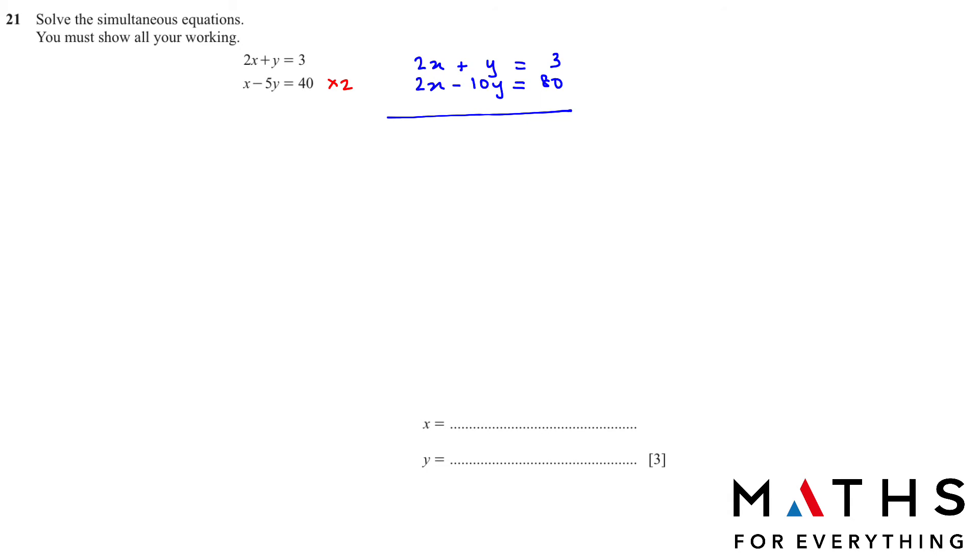Because my signs are same, 2 plus 2 will give me 4, so I need to subtract. When we subtract, all the signs change for each term. 2 minus 2 is 0. If there's no number, there is a 1, so 1 plus 10 will give me 11y. And 3 minus 80 will give me negative 77. So y equals negative 77 divided by 11, which is negative 7.